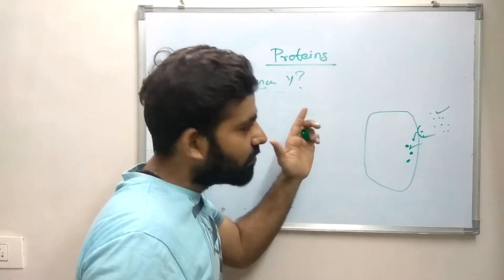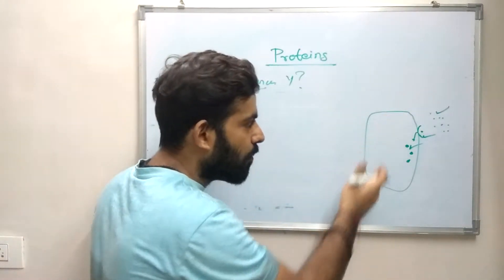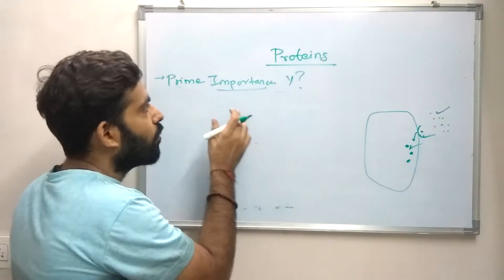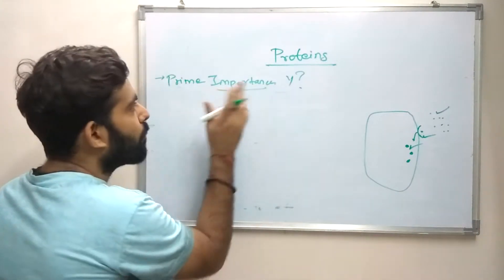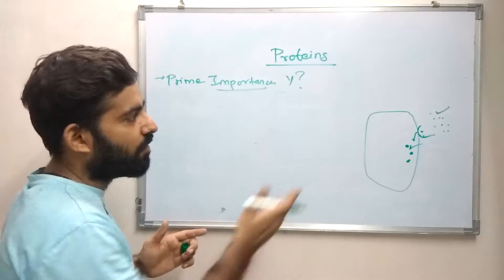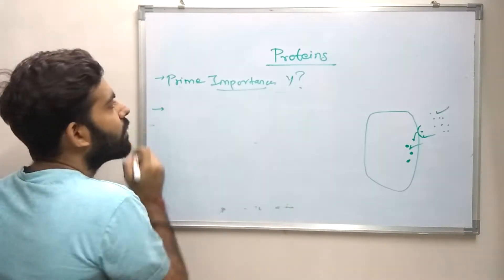To carry out a certain mechanism there are different number of proteins that are present. So we all understood that the protein is of prime importance to the cell from this.